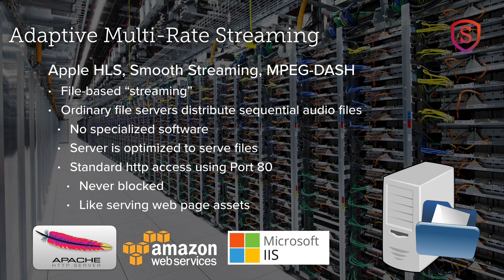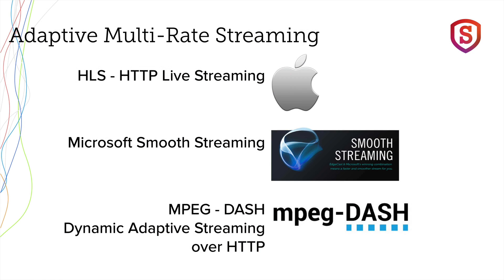There are three different standards: Apple HLS, Microsoft Smooth Streaming, and MPEG-Dash — with Apple HLS being the most popular one right now. Adaptive multi-rate streaming is file-based streaming — not a stream, but files. Ordinary file servers distribute sequential audio files. There's no specialized software; the server is optimized to serve files using standard HTTP access on port 80, so it works from everywhere and is never blocked — just like serving web page assets. You can use Apache, Amazon Web Services, Microsoft IIS, or any standard file server platform.